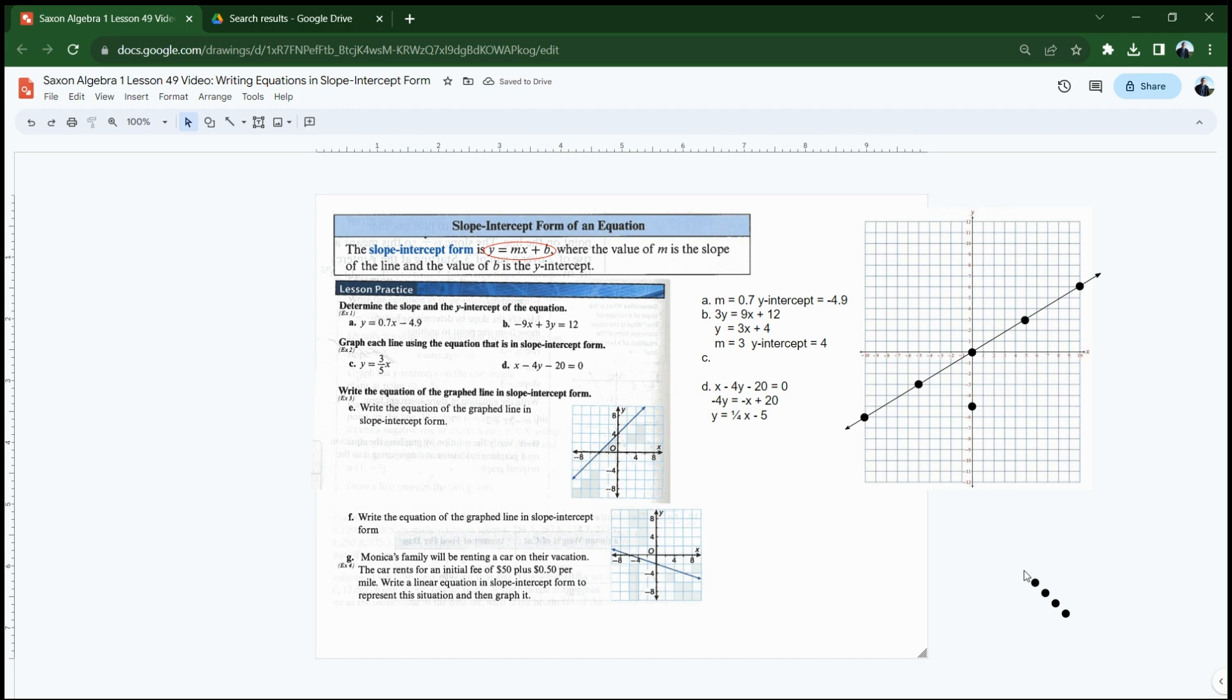And then from there, I have to go up 1 over 4. 1 over 4. Rise over run. Up 1 over 4. Up 1 over 4. Perfect. And then if I want to go the other direction, down 1, back 4. There we go. And then down 1, back 4. Again, down 1, 1, 2, 3, 4. Perfect.